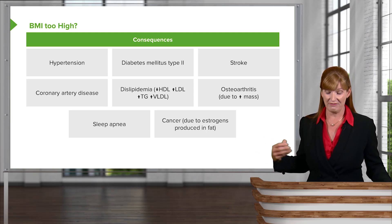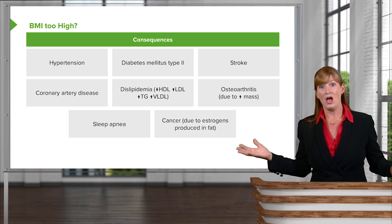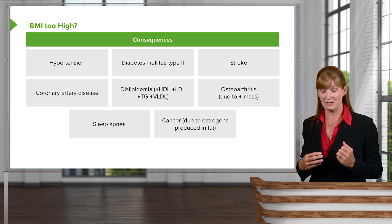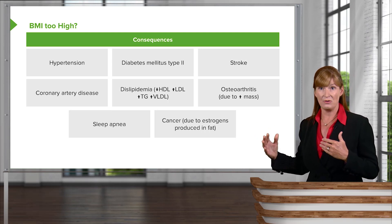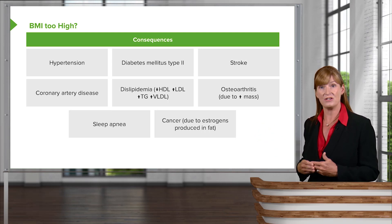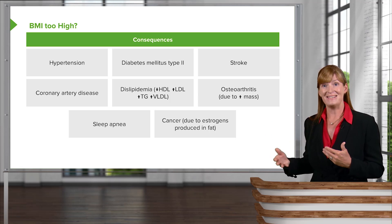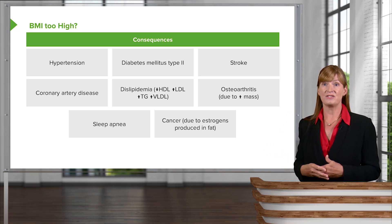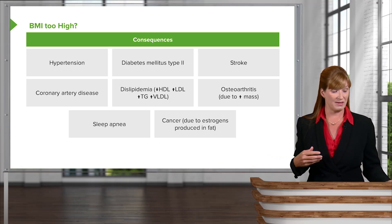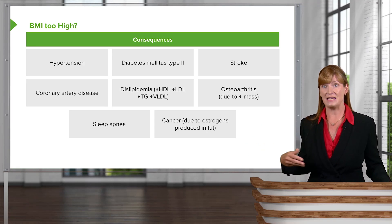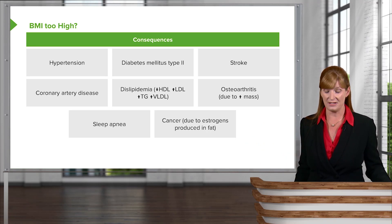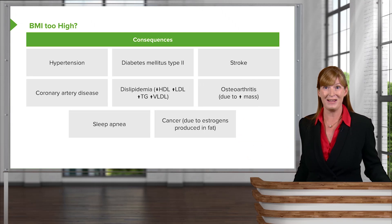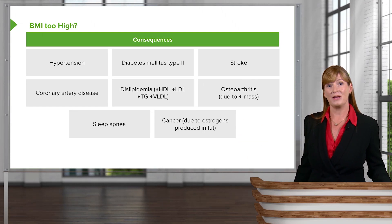Sleep apnea can also occur, and of course cancer. Part of the reason we're at higher risk for cancer is that it's not only the ovaries that produce estrogen — fat cells also produce a certain amount of estrogen. So if you have an estrogen-dependent cancer develop, higher levels of fat increase estrogen levels, and there are many studies showing that leads to higher incidence of cancer.